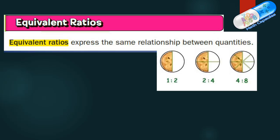First, what is the meaning of equivalent ratios? Equivalent ratios express the same relationship between quantities. Look at the drawing here. We have three circles with the same size each. Each one is divided into two halves. The first one is divided into two parts only, and one of them is shaded, so the ratio is one to two. We write here one over two as a fraction.